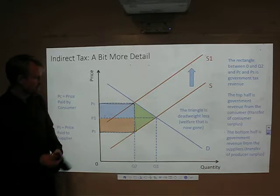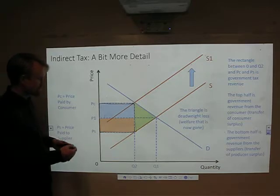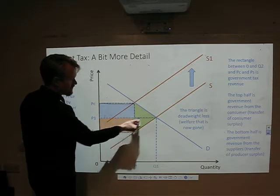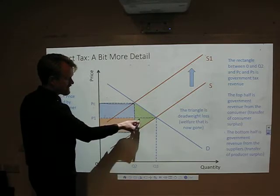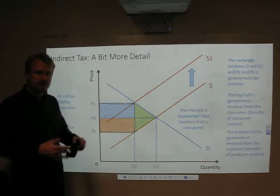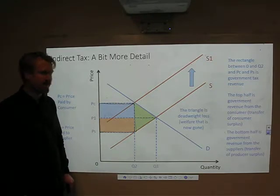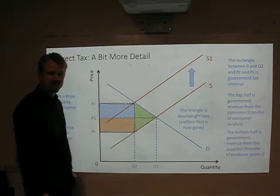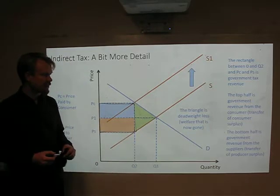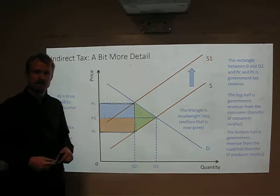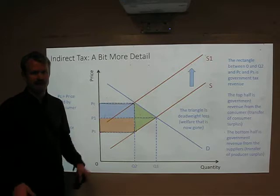And we can also identify that there is a triangle here, this green triangle. This used to be out of the old equilibrium, either consumer surplus or producer surplus. That area is no longer going towards society welfare. And so, because at Q2 we're not selling that many, and so this whole area is now just lost welfare. And so that triangle is dead weight loss. Welfare which used to exist, but which is now gone.